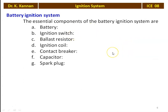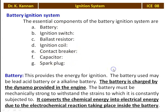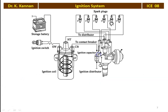Now, the battery ignition system. These are the components: a battery, ignition switch, ballast resistor, ignition coil, contact breaker, capacitor, and spark plug. In the diagram, we have the storage battery, ignition switch, ignition coil with primary and secondary winding, a distributor, spark plugs, contact breaker, and capacitor. We will explain each component one by one.